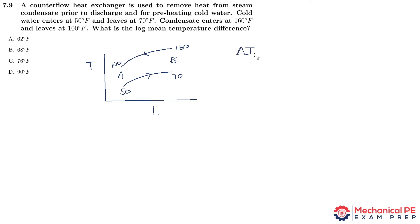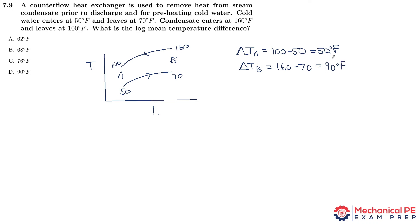Delta T_a is going to be 100 minus 50, so 50 degrees. Delta T_b is going to be 160 minus 70, which is 90 degrees. The good thing about this method is whether you define 'a' as 90 and 'b' as 50, or vice versa, you'll still get the correct answer — it turns out to be the same.